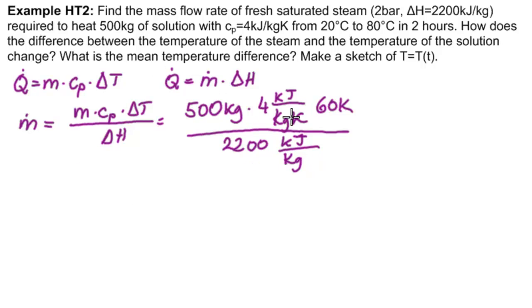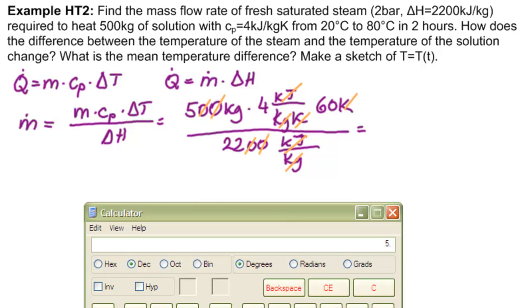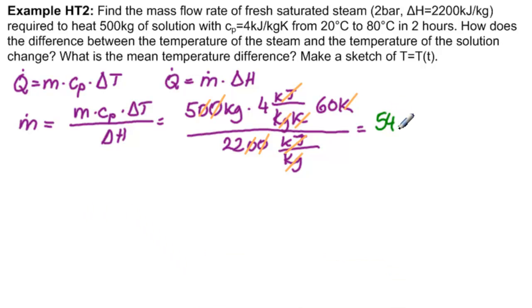So what do we cancel? We cancel kilojoules per kilogram, kilojoules per kilogram, Kelvin with Kelvin, and we're left with kilograms as we want. So we have, we'll cancel a couple of zeros here, and then we'll put it in our calculator. 5 times 4 times 60 divided by 22 equals 54.55. So 54.55 kilograms.